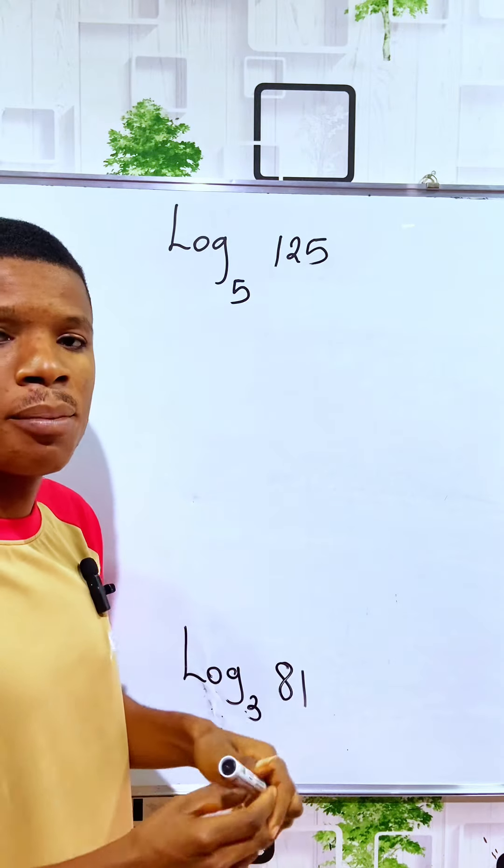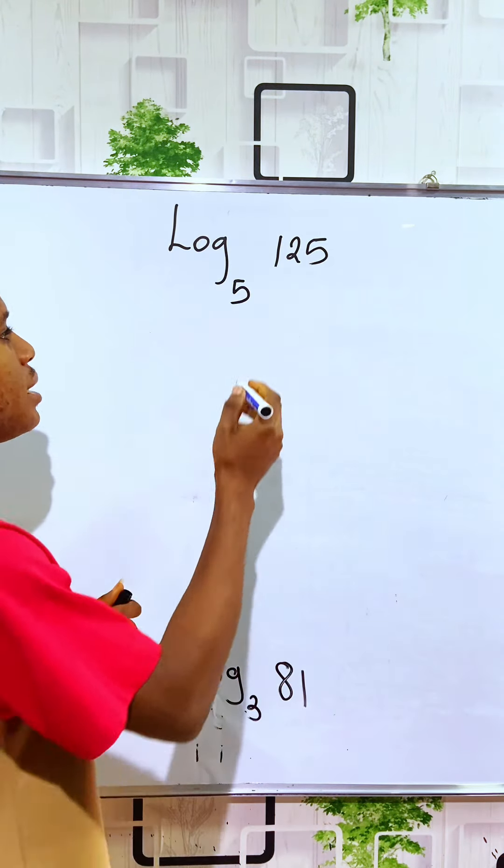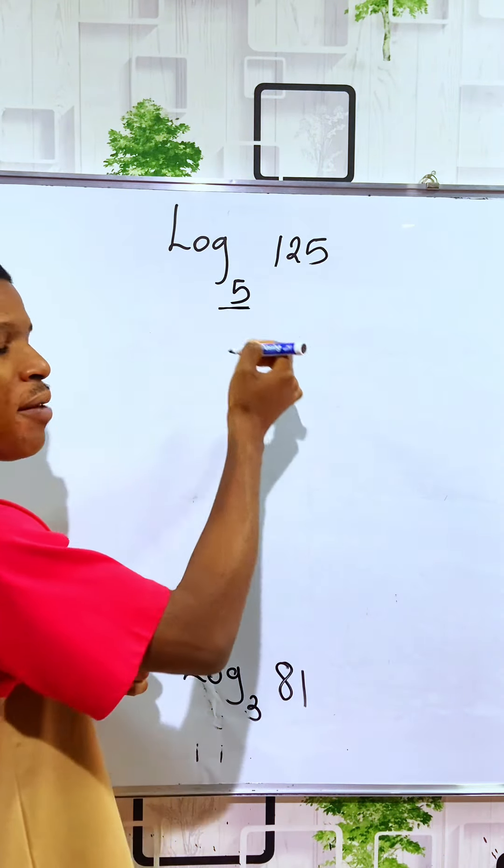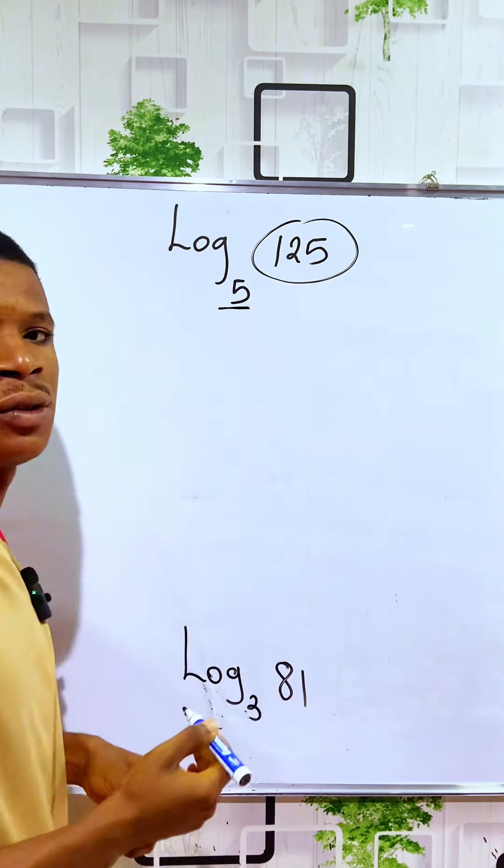Remember, logarithm of a number is trying to know how many times we are going to raise the base 5 to get the number 125.